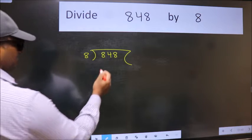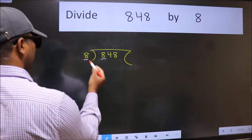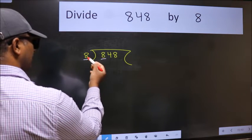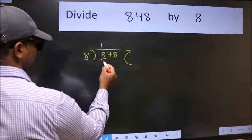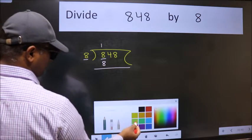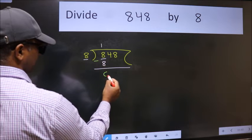Next, here we have 8 and here 8. When do we get 8 in 8 table? 8 once 8. Now we should subtract. We get 0.